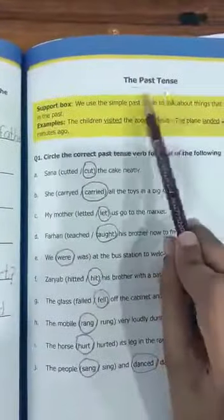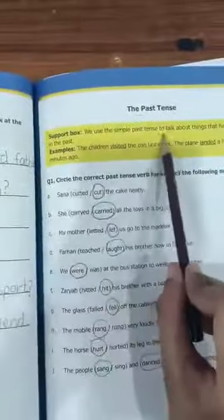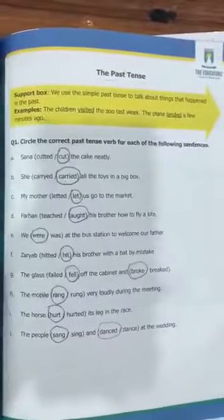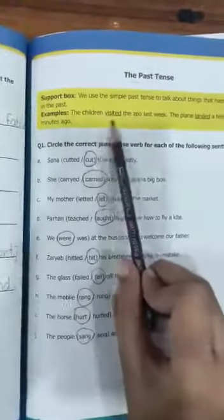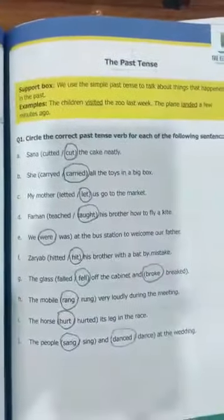What is the past tense? We use the simple past tense to talk about things that happened in the past. That is called simple past tense.